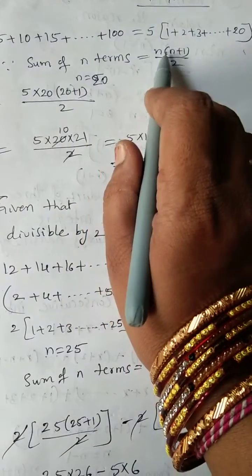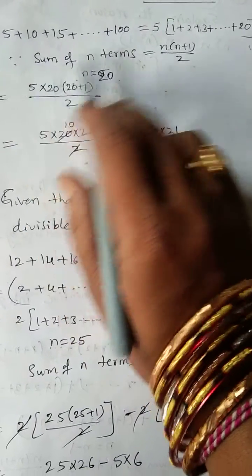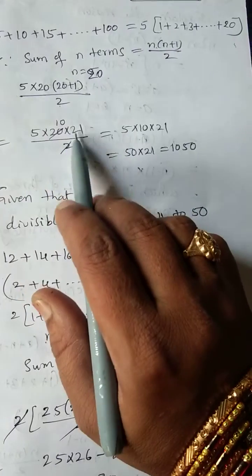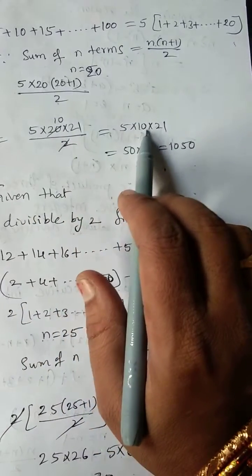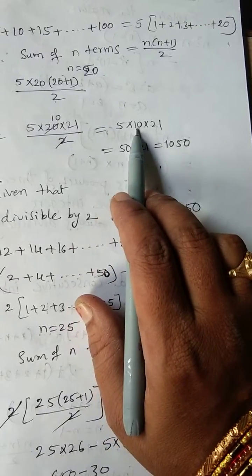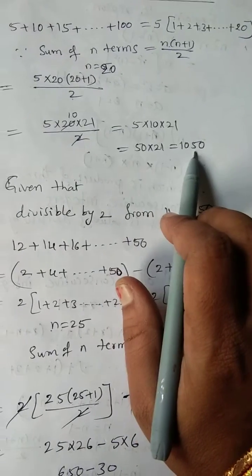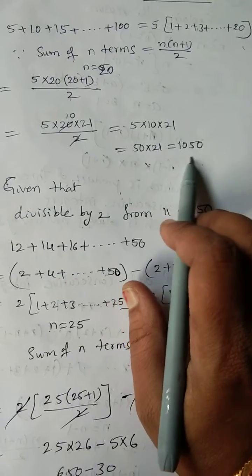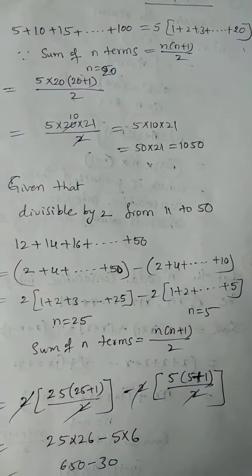So substituting: 5 × 20 × (20+1) / 2 = 5 × 20 × 21 / 2. Cancelling 2: 5 × 10 × 21 = 50 × 21 = 1050. So the sum of integers which are divisible by 5 from 1 to 100 is 1050.